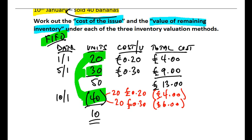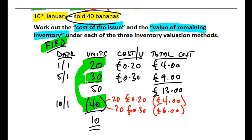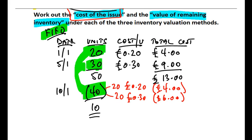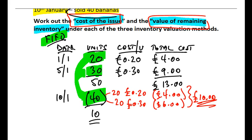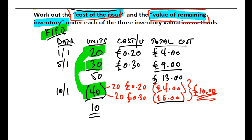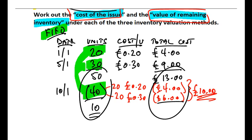Those 20 bananas cost more because we paid a higher cost per unit. We're after two figures: firstly the cost of the issue — the 40 bananas sold — which is the £4 value of the first 20 plus the £6 value of the other 20, giving a cost of issue of £10. For the value of remaining inventory, we knock the cost off the total: £13 minus £10 leaves £3 as the value of the remaining 10 bananas.